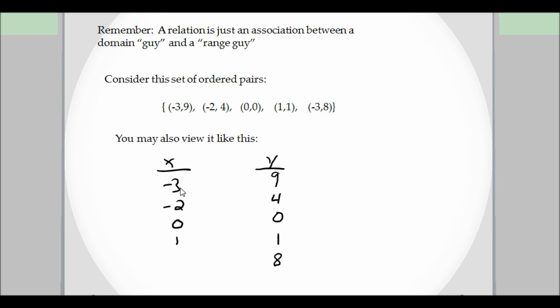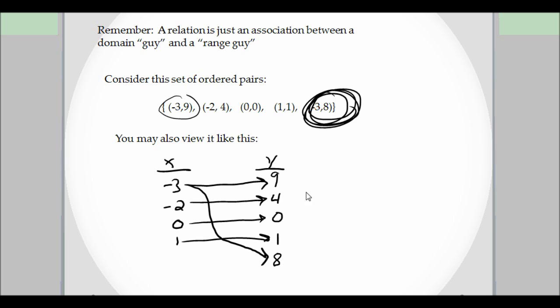So let's go through. Negative 3, we now associate with 9. Negative 2 goes to 4. 0 goes to 0. 1 goes to 1. But what happens here? Well, that says negative 3 also goes to 8. So not only does it go to 9, but it will also go to 8. This violates our definition of a function.